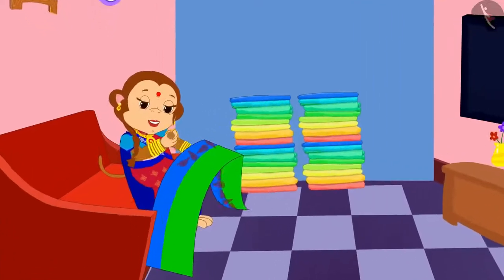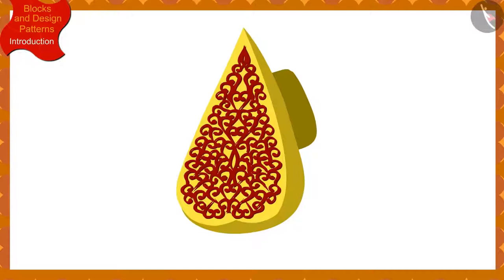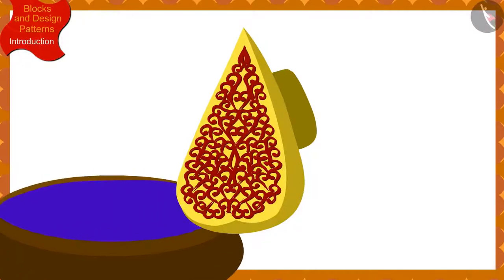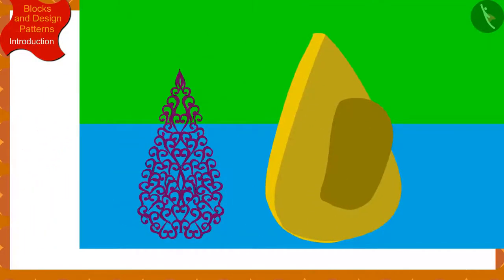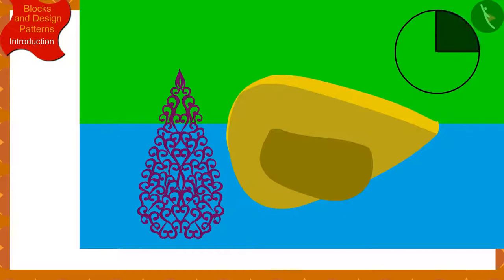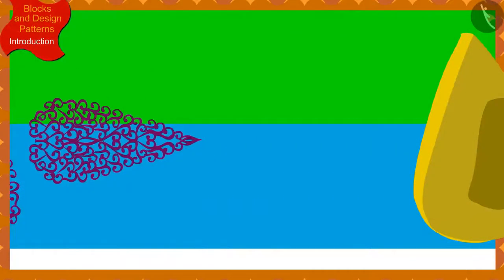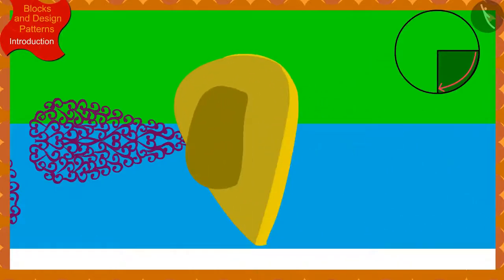Banno returned home and started designing a saree for Chanda. Banno has a block of this design. She first dipped her block in a box of color and made an impression on the saree. She then made a second impression by dipping the block in the box of color again, this time rotating the block a quarter in the clockwise direction. Banno continued making the design by every time dipping the block in the box of color and rotating it a quarter from the previous impression.